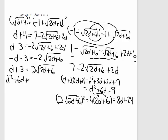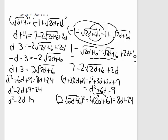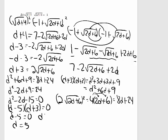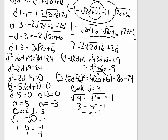This is again a quadratic equation, so I'm going to set it equal to zero. I'll bring the 8d over, then bring over the 24. Factor, then set each factor equal to zero. Now I want to check if either solution works. When I check d equals 5, I get negative 1 equal to negative 1 — so d equals 5 is a solution. When I check negative 3, I get 1 equal to negative 1 — that is not a solution. So I only have one solution, and that's d equals 5.